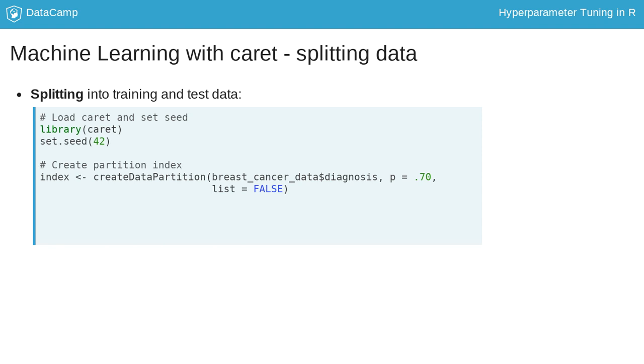With the argument p, we tell the function what proportion of the data should go into the training set. Here, 70%. The index that will be created can then be used for subsetting the original data set.